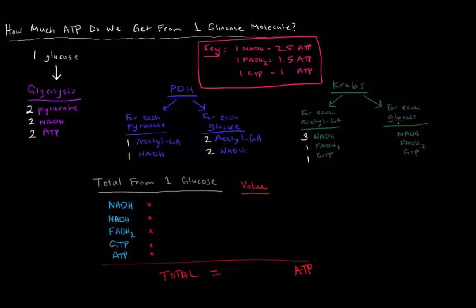So, that's for each acetyl-CoA that goes through the Krebs cycle. But what about for each glucose? Well, again, if each glucose broke down into two pyruvates, and those two pyruvates, each one gives you one acetyl-CoA, that means you have two acetyl-CoA's. So, two acetyl-CoA's, you would just double all these numbers. For each glucose, you would get six NADH's from the Krebs cycle, two FADH2's, and two GTP's. So, now, we're going to calculate how much energy we get from one glucose molecule.